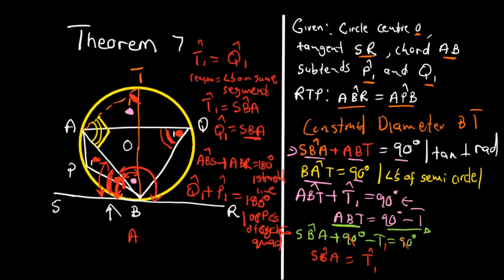So angle ABS plus ABR will be equal to angle Q1 plus P1. Therefore, since these two are equal, because we said angle ABS plus APR is to cost 180 angle and then we said angle Q1 plus P1 is to cost 180. So they are equal to each other like this.